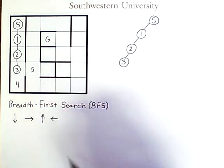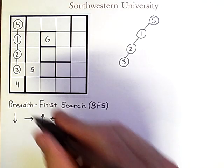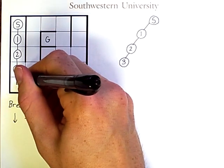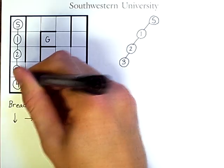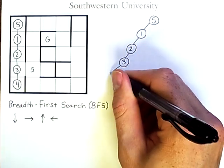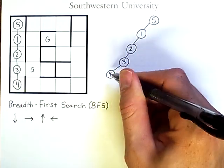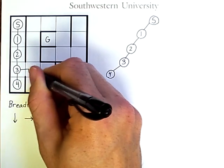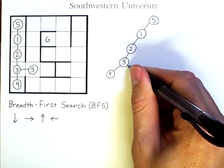So now, having planned the order I will search these nodes, I will then actually search them. I check four, add it to the tree, and then I check five, and add it to the tree.